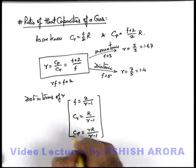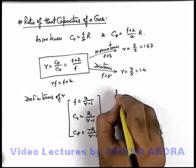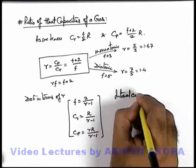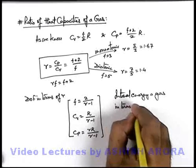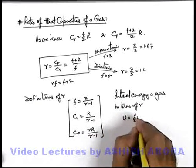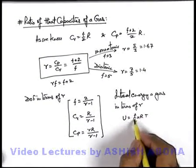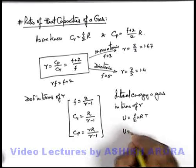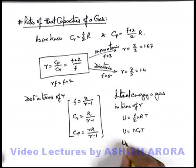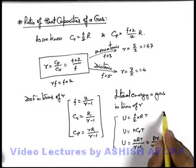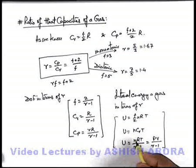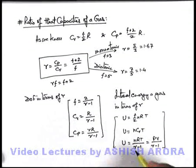Always remember these three energy relations. Internal energy of a gas can be written as U = (f/2)nRT = n·Cv·T = nRT/(γ−1) = pV/(γ−1). This gives us the internal energy of a gas in a specific state. These relations are very useful for various numerical applications, so keep these results at your fingertips.